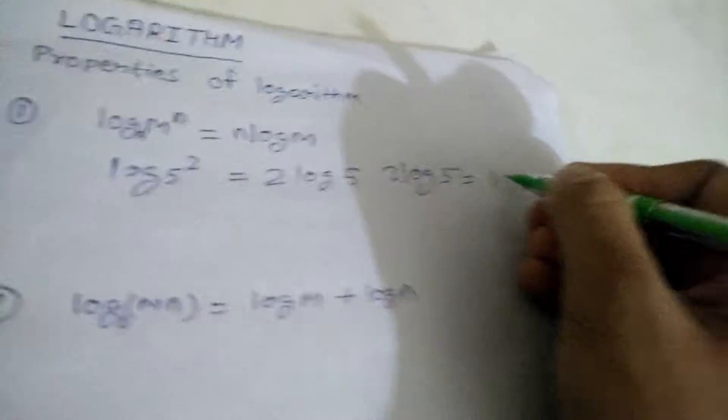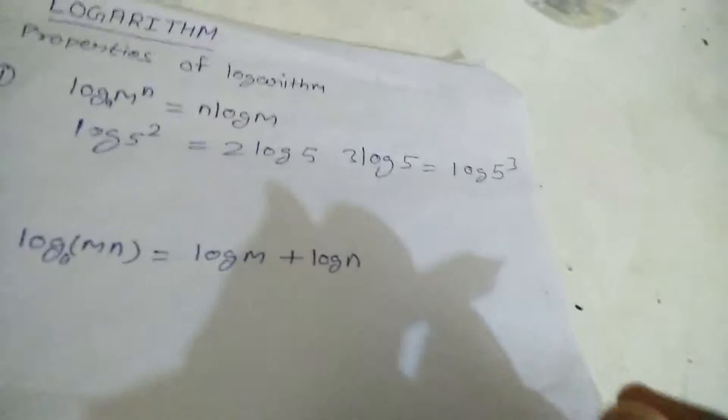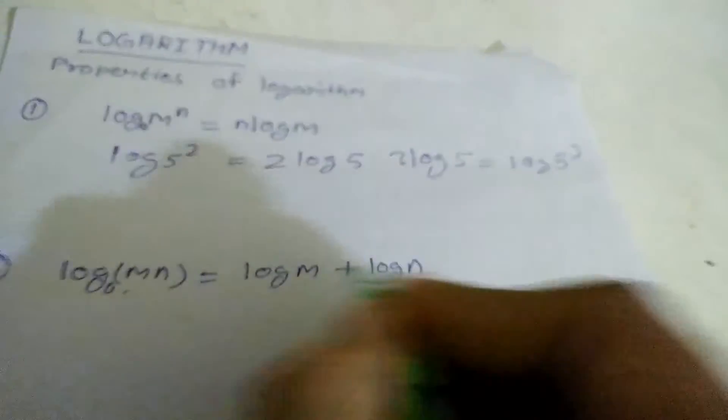We can write log of 5 raised to the power 3. Next property is log m n, which we can write as log m plus log n.